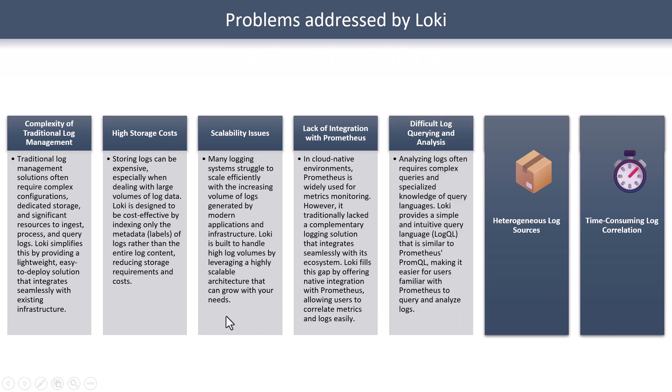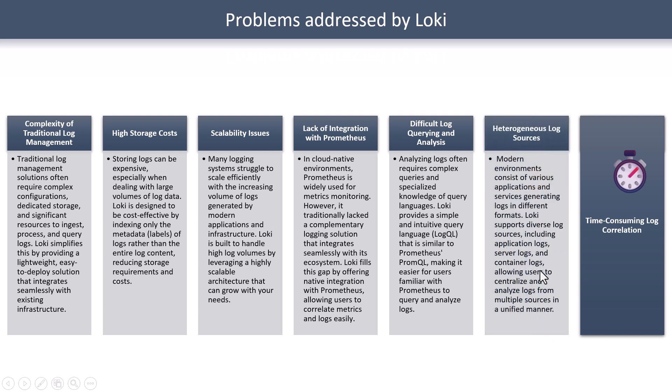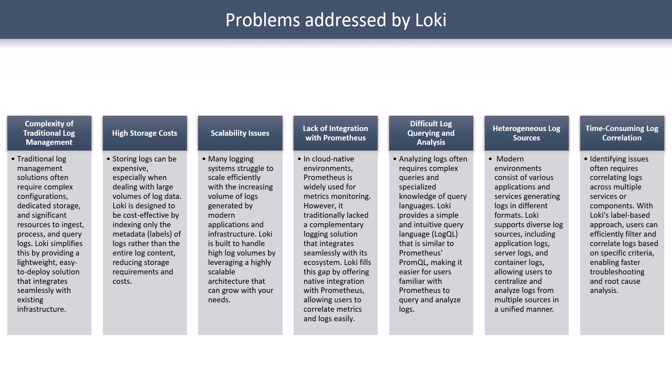Another problem Loki has solved is related to heterogeneous log sources. Modern systems send logs in various formats — JSON, flat file, or CSV. Loki can aggregate logs coming from different formats, and you can simply label them and start querying them. Additionally, Loki's label-based approach makes it easy to correlate logs — you can efficiently filter and correlate logs based on specific criteria, enabling faster troubleshooting and root cause analysis.